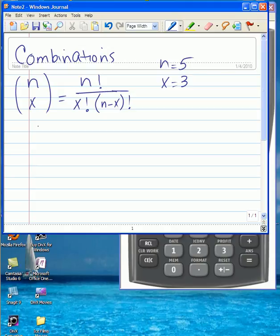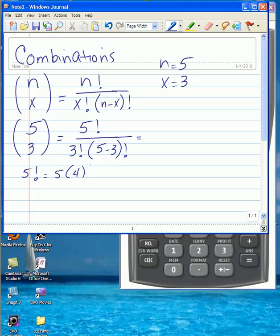So to do that computation, we have 5 choose 3 combinations that we want to compute. So we will have 5 factorial divided by 3 factorial, and in the denominator we still have 5 minus 3 factorial. Now we know 5 factorial is 5 times 4 times 3 times 2 times 1.